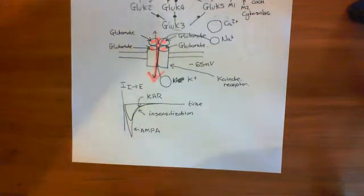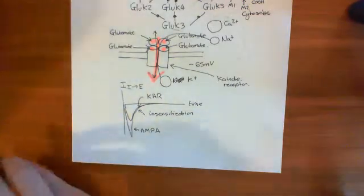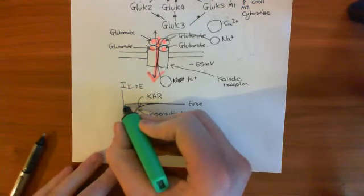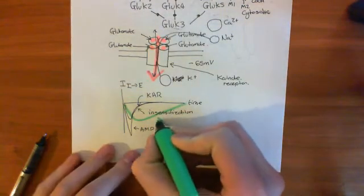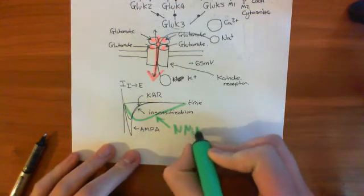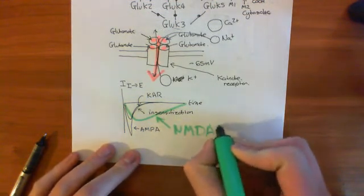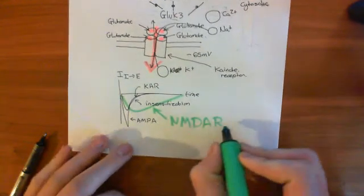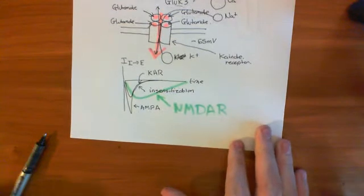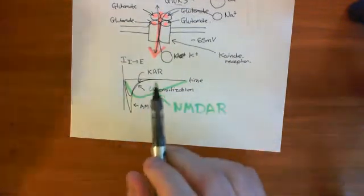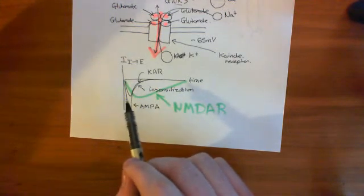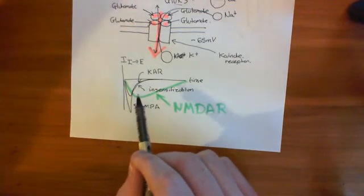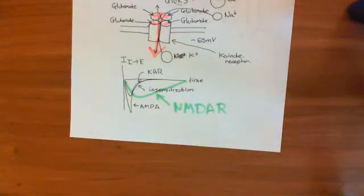To remind you of NMDA: if I draw the NMDA graph in green, it shows much slower inactivation kinetics compared to both AMPA and kainate. So kainate has yet again different kinetics to the other receptor types — its inactivation is very similar to AMPA, but it has a lower maximum current than AMPA receptors.